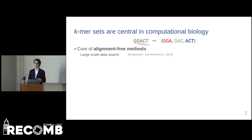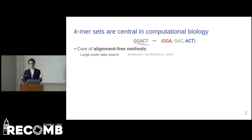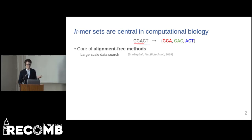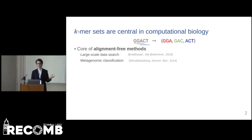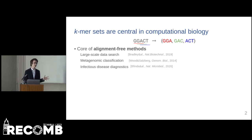K-mers find use in search engines for genomic data. If we have assembled data, traditional methods like BLAST are perfectly fine, but a lot of viral and bacterial data are not assembled, and here k-mer-based methods like BWA-MEM shine. Other cases are in metagenomics, where using k-mers it is possible to get much higher speed of classification than using alignment-based methods, or when we want to rapidly diagnose infectious diseases.